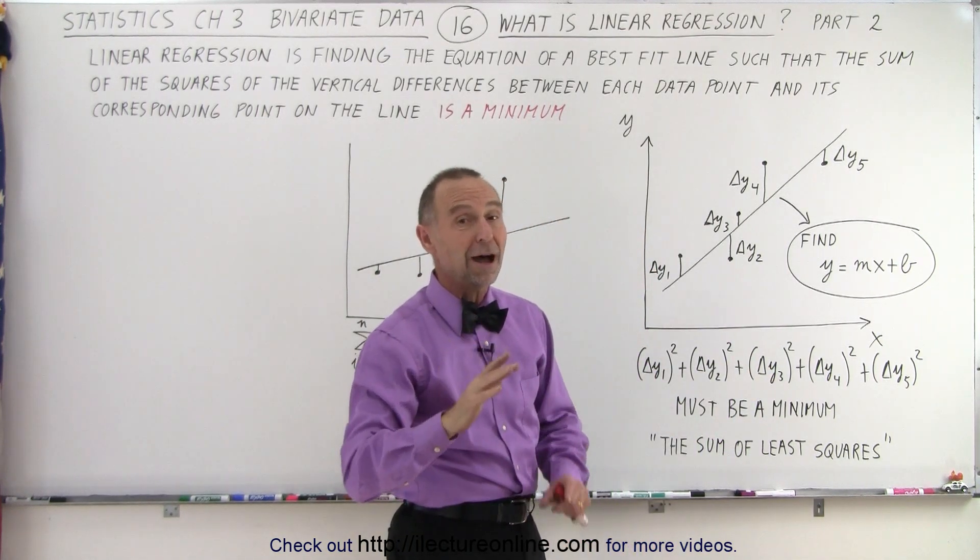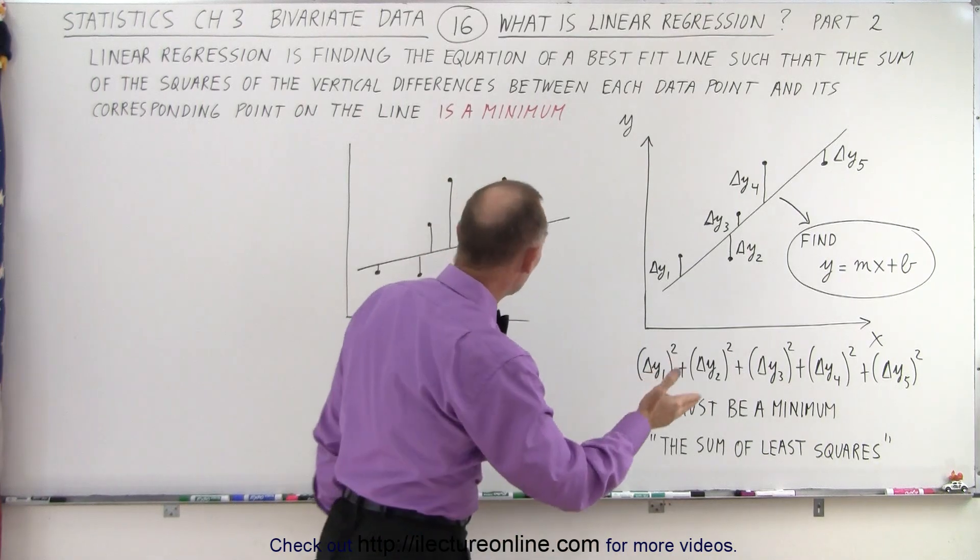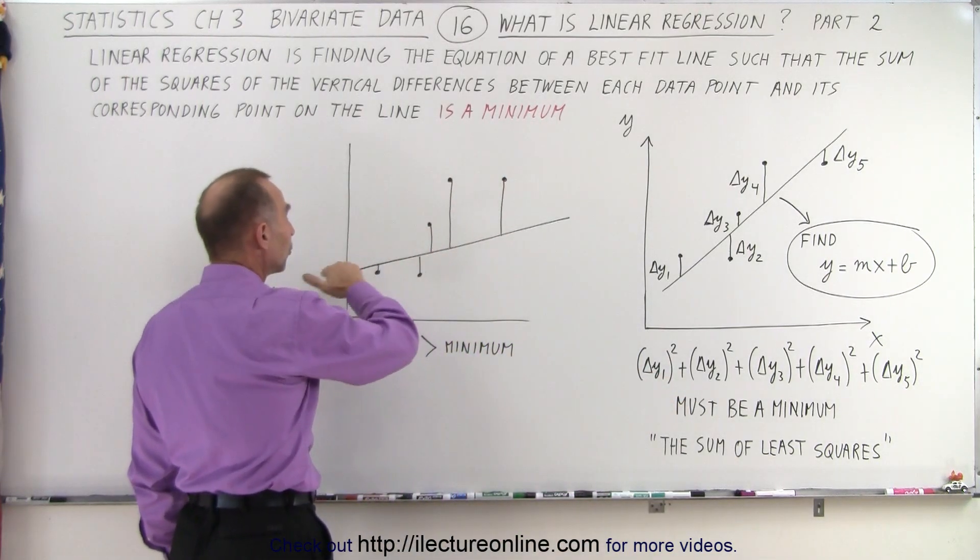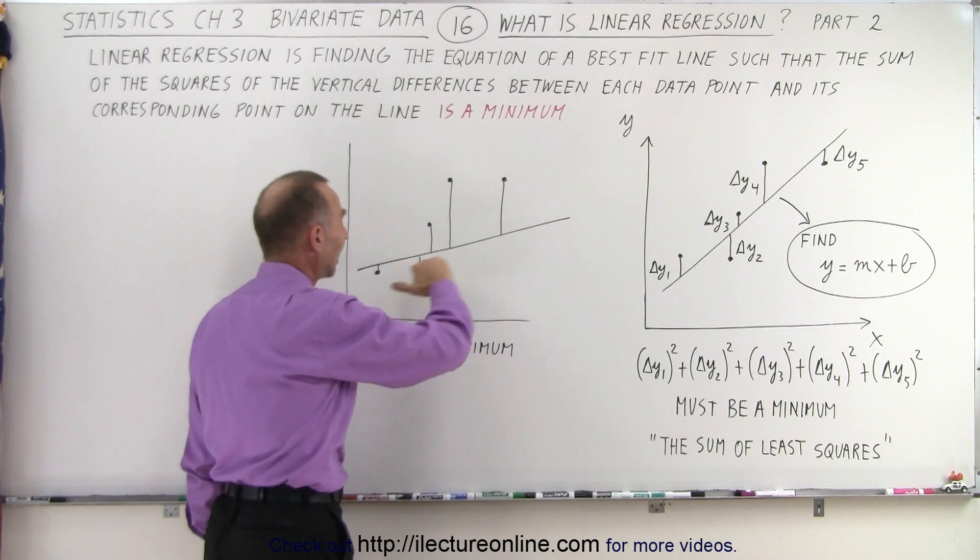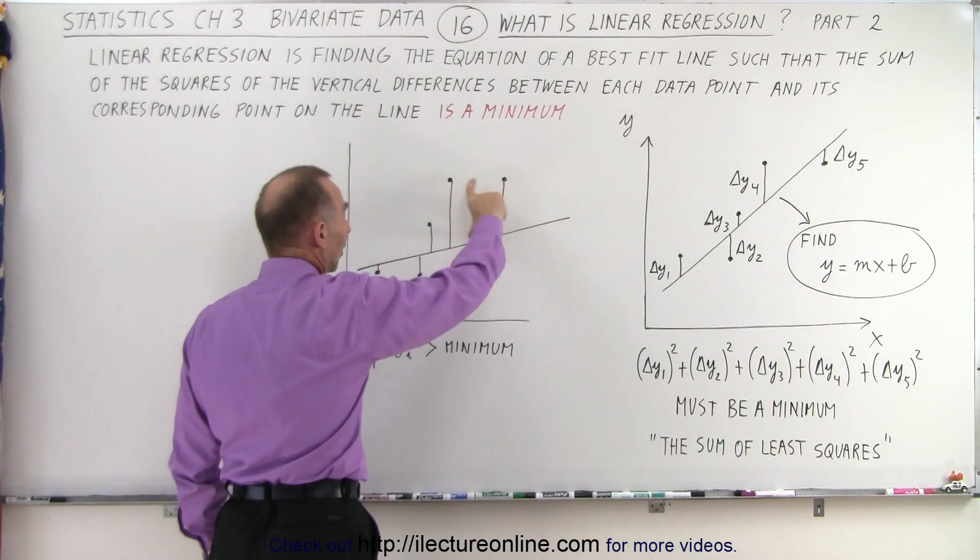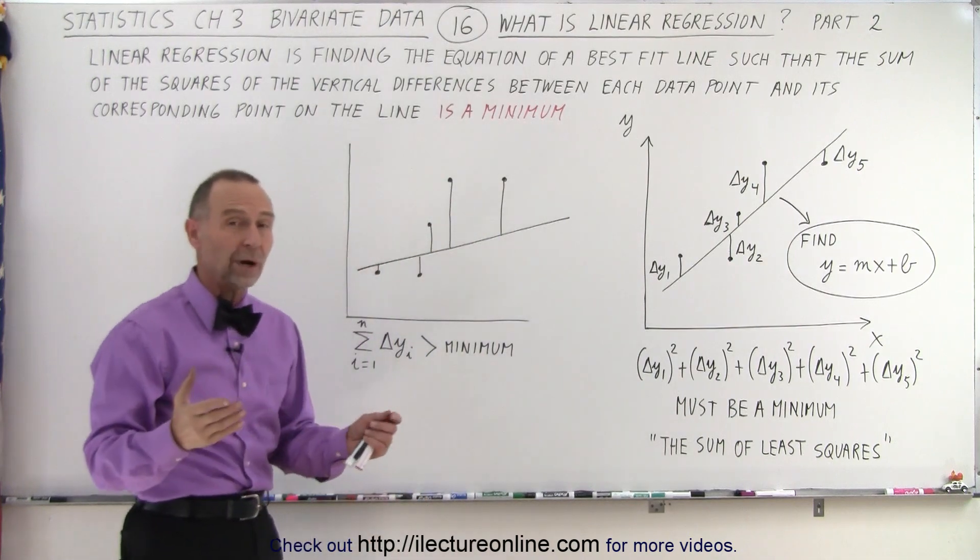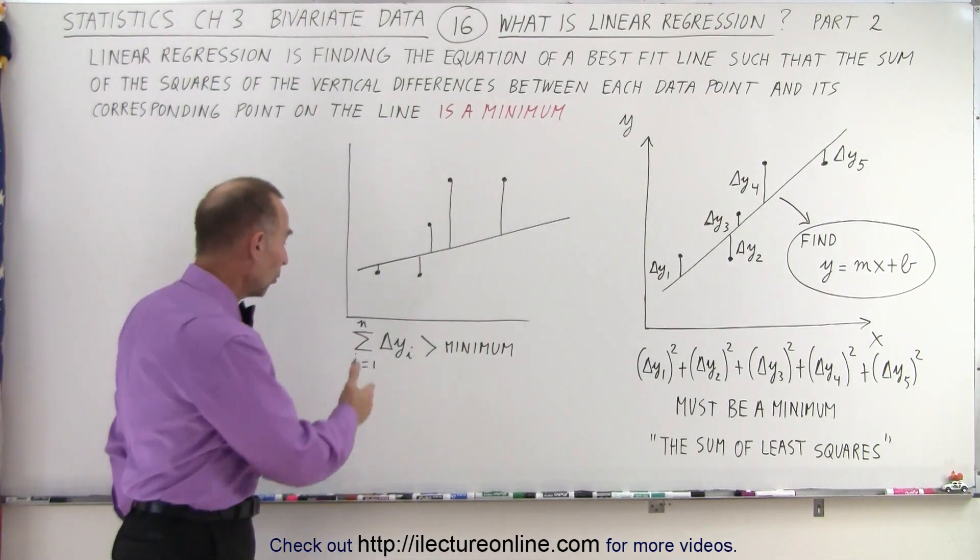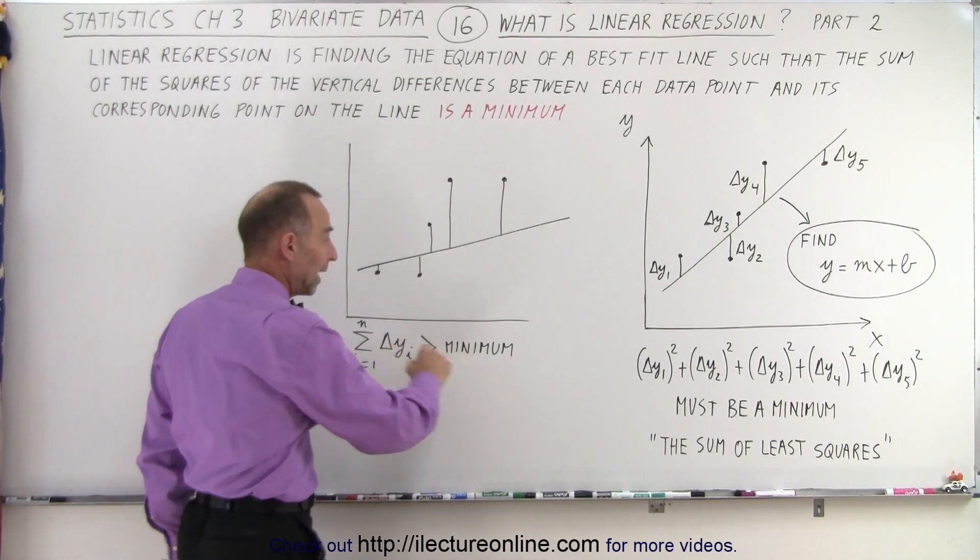Well, we'll get to the point of how to actually do that. But notice if I have the same data points, and I picked the wrong best fit line, this is not the best fit line, because notice some of these differences, these are very big. And then when we square them, we get huge numbers. So when we sum up, and this is what we have over here, in short form...